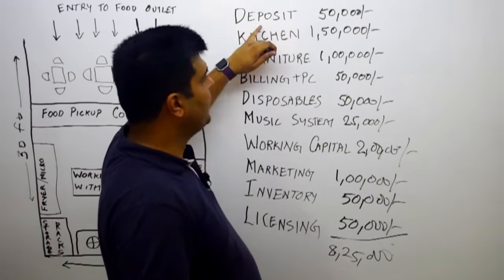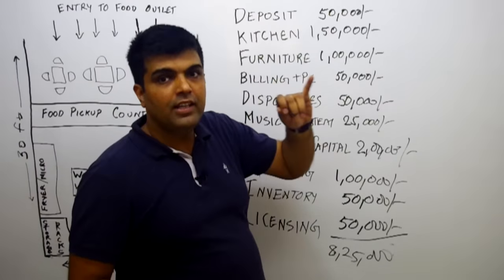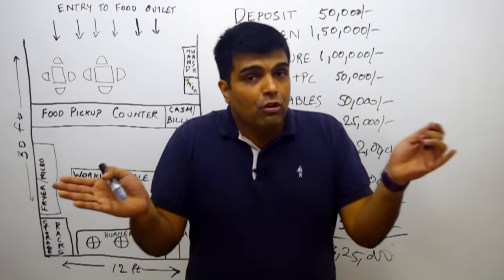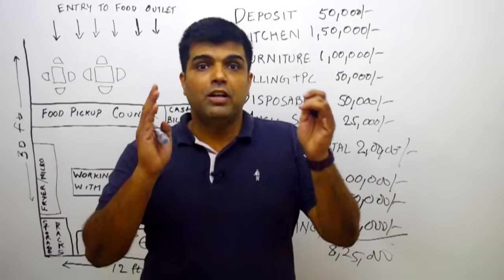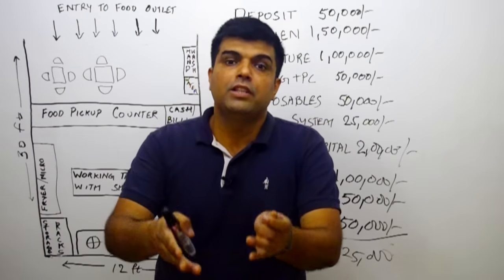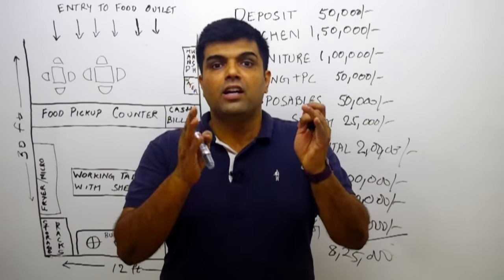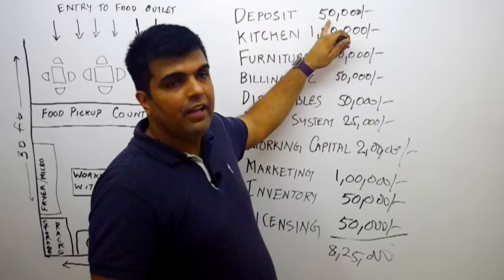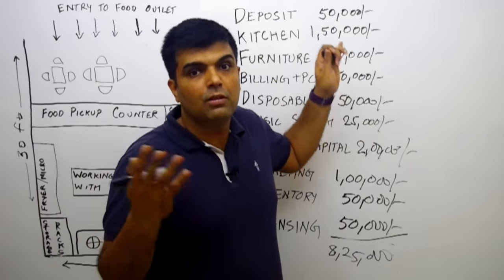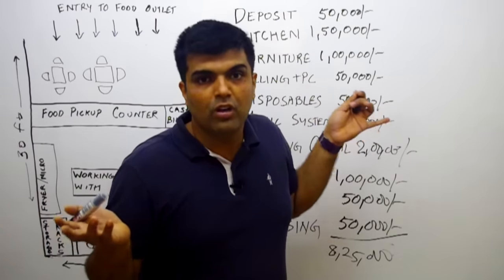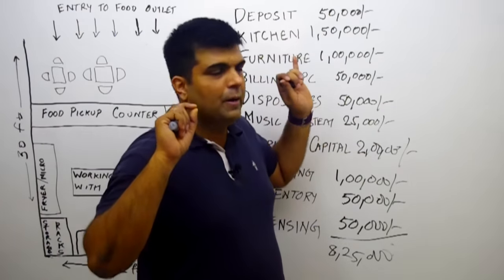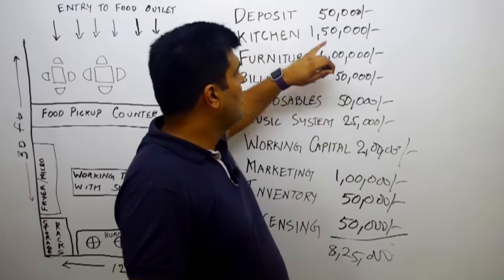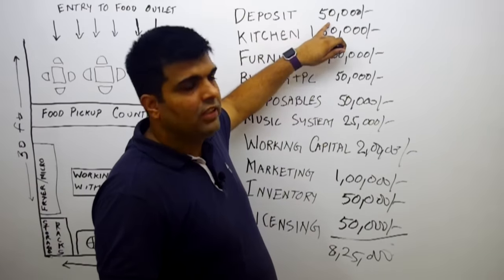The first thing is the deposit. I have taken a deposit of around 50,000 rupees. I don't know where you stay — you might be in an urban area, a rural area, a tier 2 or tier 3 city. This may vary; somewhere it might be around 20,000, somewhere it might be around a lakh rupees. I am giving a fair approximation of around 50,000 rupees.